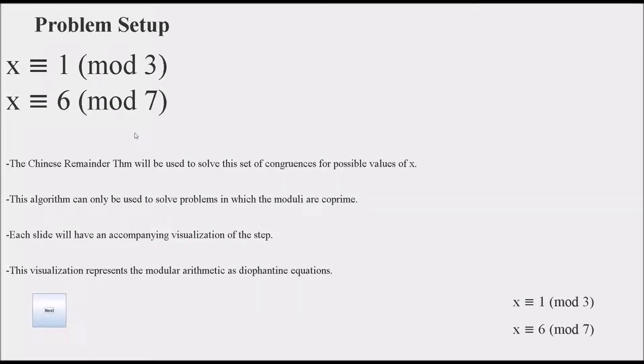We have two congruences here: x is congruent to 1 mod 3 and x is congruent to 6 mod 7, equivalent to the statement that x when divided by 3 leaves a remainder of 1. The Chinese remainder theorem states that given any number of these congruences, as long as the moduli are coprime, there exists a unique solution and you can use this method to find the solution.